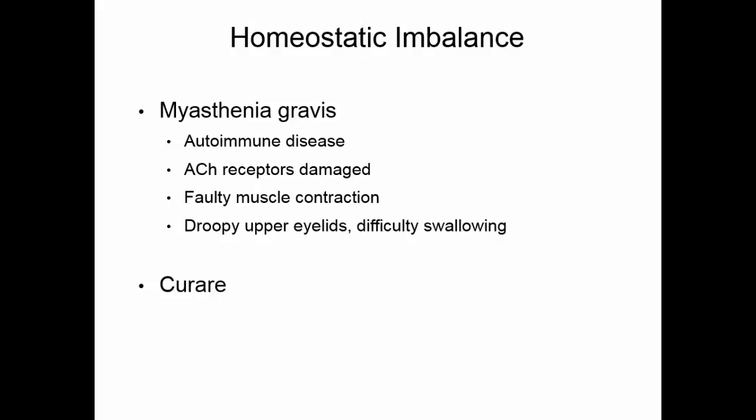Curare was harvested from plants by native Africans. Curare actually blocks acetylcholine receptors — if those receptors are blocked, then no contraction can occur, and this causes paralysis. It was used by African hunters to paralyze animals so that they could get closer to them and actually kill them. During the Korean War, doctors started using curare during surgery to help keep muscles relaxed so that they could perform better surgical procedures.